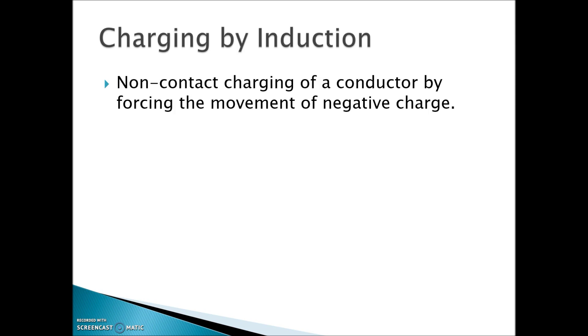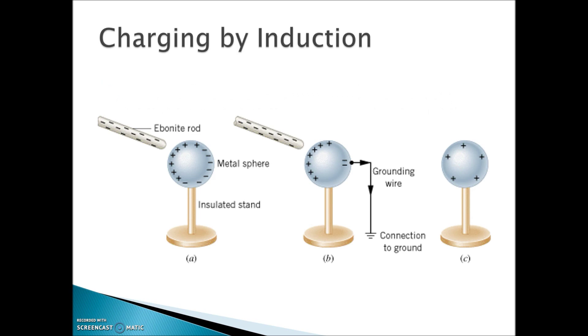To better understand this process, here's a series of pictures. In picture A, we have a negatively charged rod. We bring it near a conductor that is insulated from ground. This negatively charged rod will push away a lot of electrons in the conductor. Like charges repel. This leaves a lot of positive charge exposed on the left-hand side of the conductor.